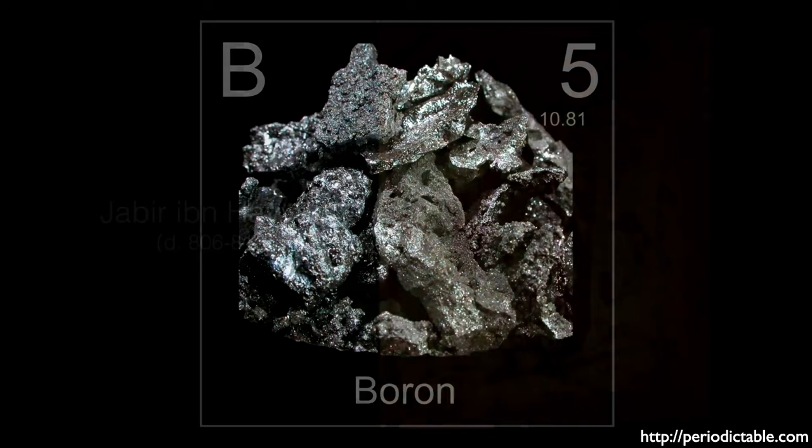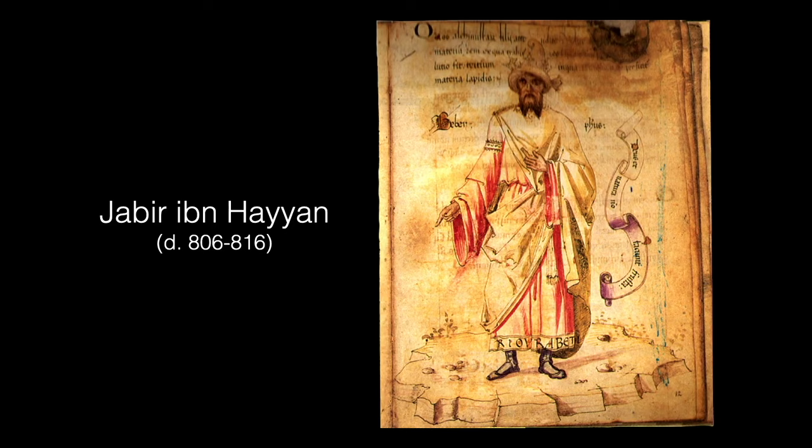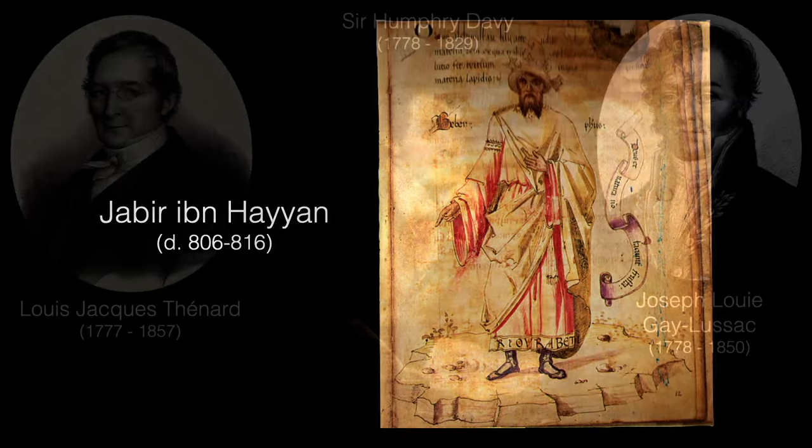It's also a historical element. A true Renaissance man way before the Renaissance was Jabir ibn Hayyan, whose work contains the oldest known systematic classification of chemical substances. He mentioned the mineral borax, a source of boron, in his writings. He's a fascinating individual — I encourage you to look up more information on him. More on borax in a bit.